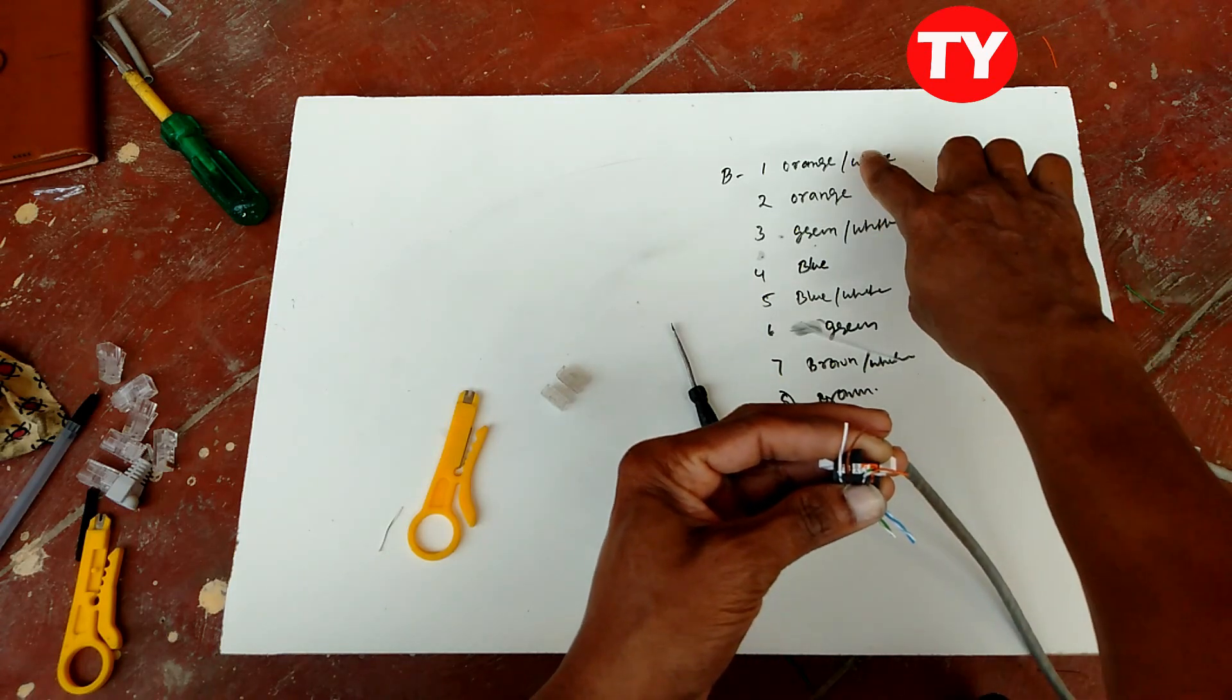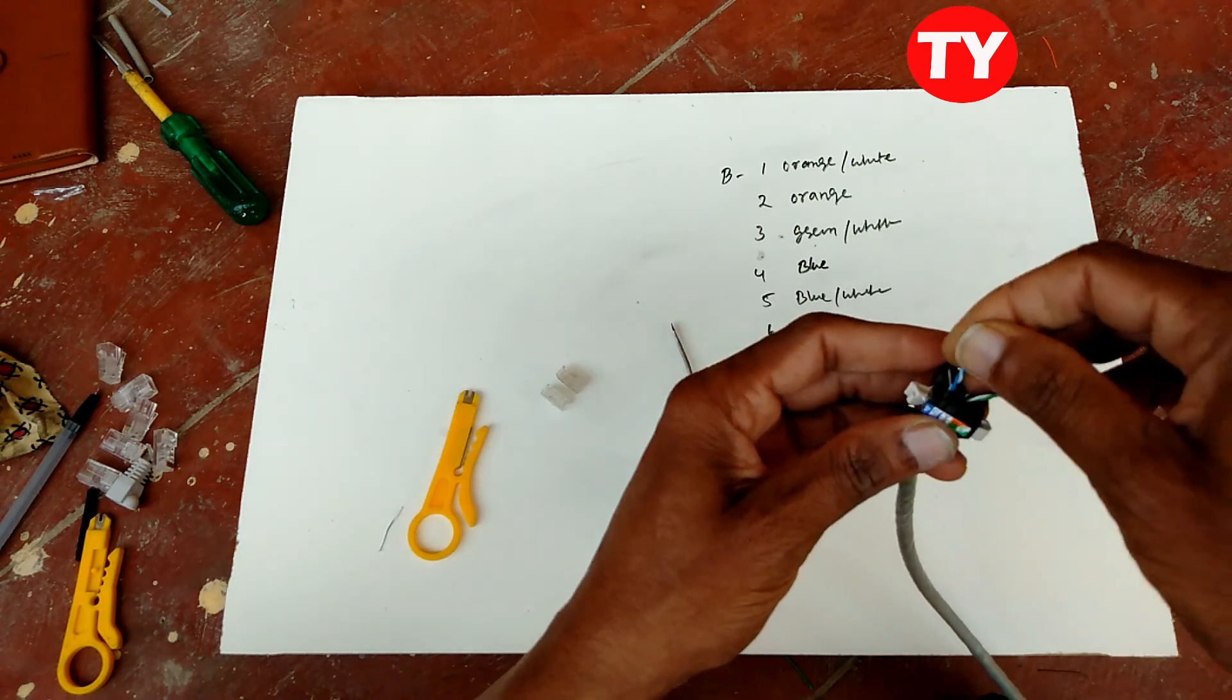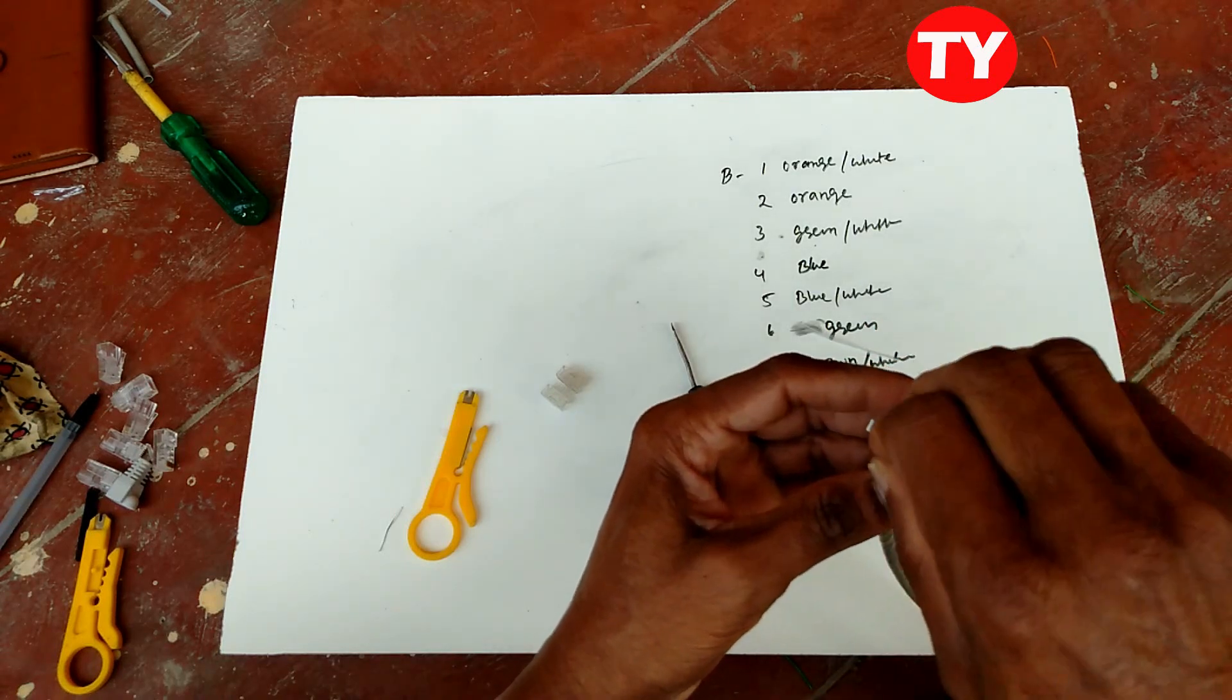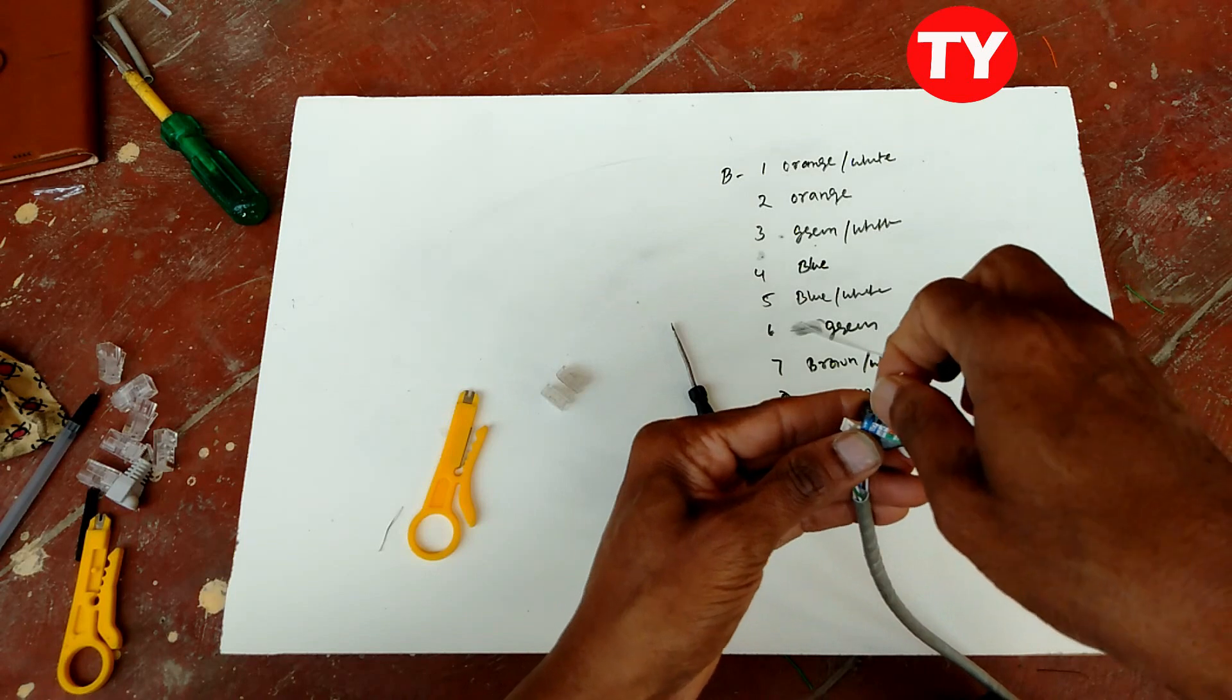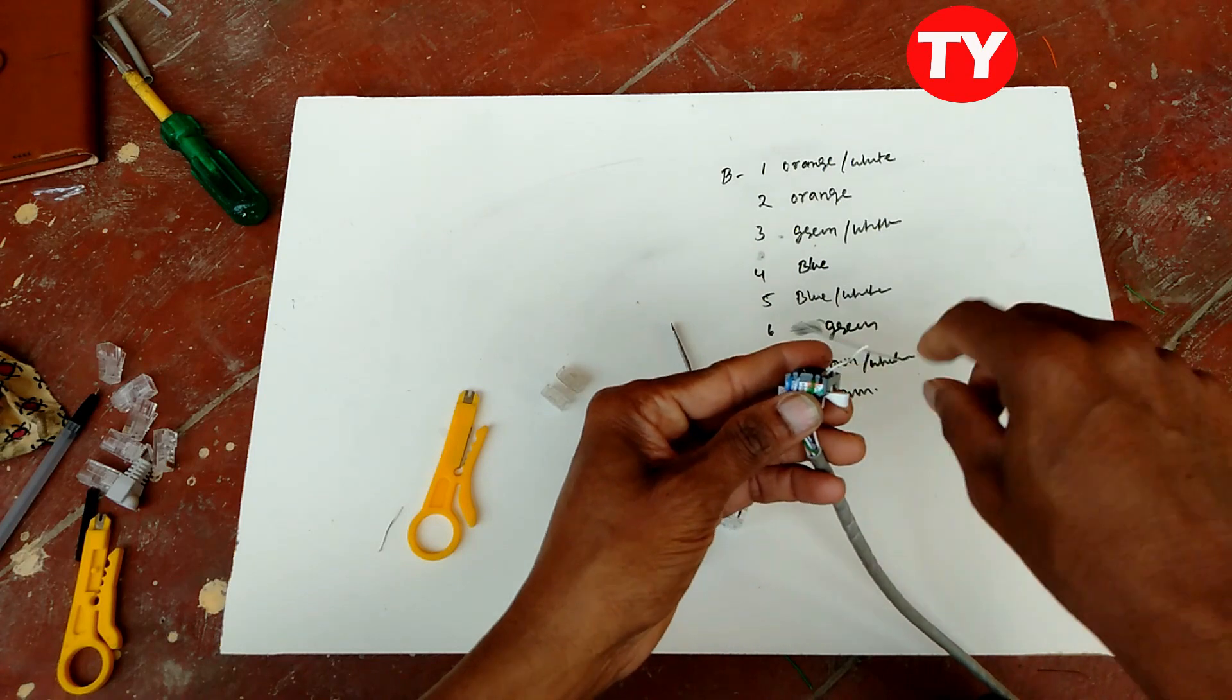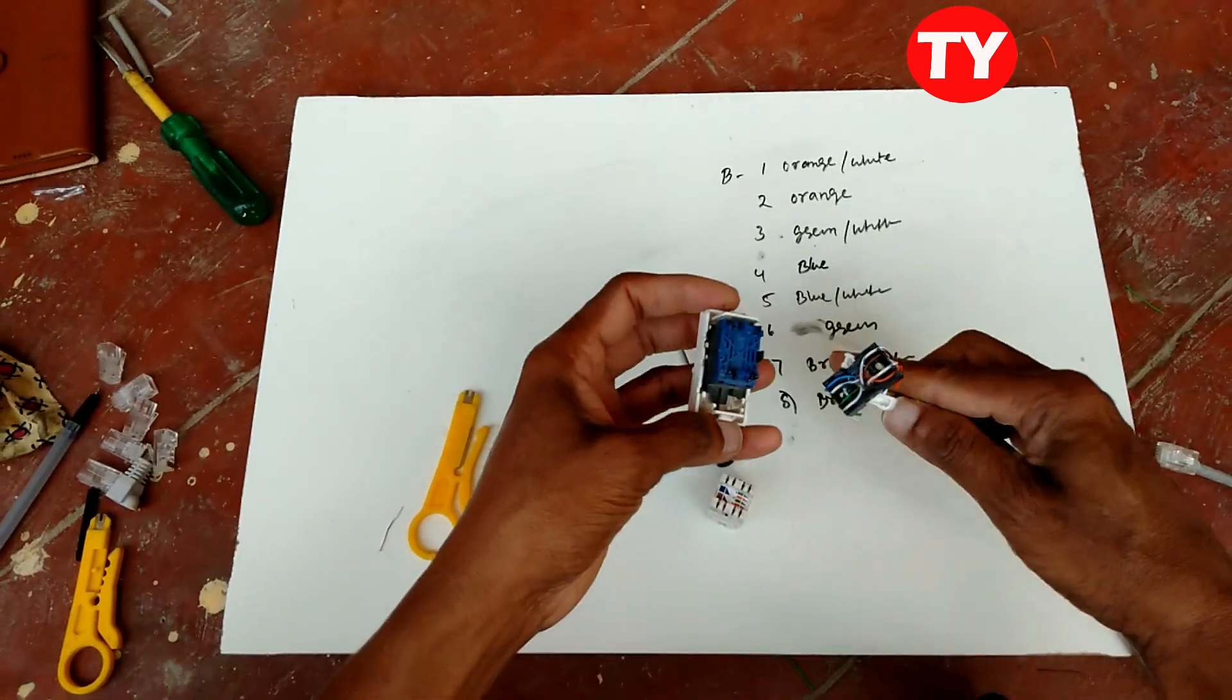First orange-white, likewise eighth. After that we have fourth blue-white, fifth white blue-white, sixth green-white, and third white orange green-white. Like this we have to insert.